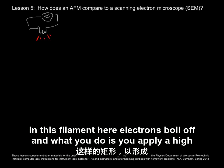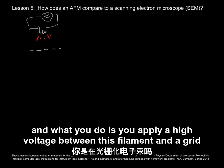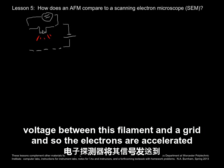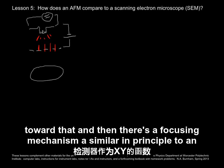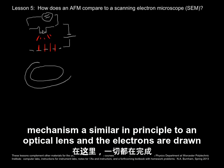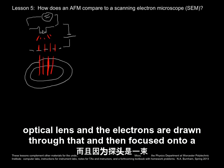What you do is apply a high voltage between this filament and a grid, so the electrons are accelerated toward that. Then there's a focusing mechanism, similar in principle to an optical lens, and the electrons are drawn through that and focused onto a sample.